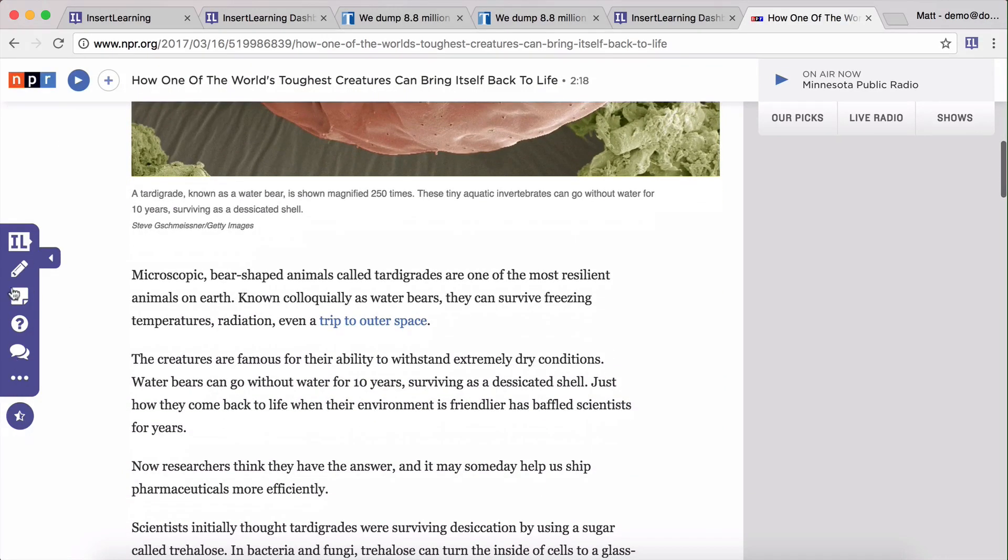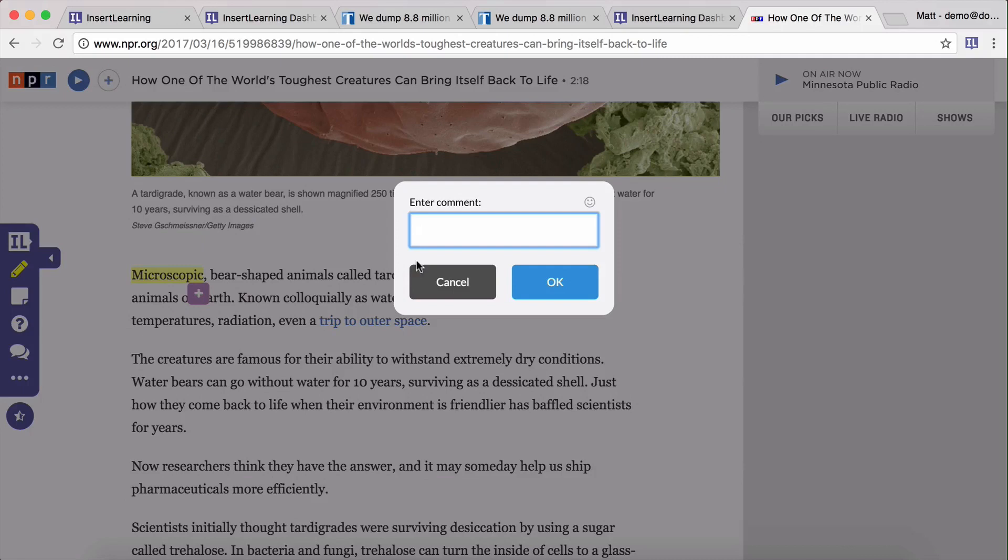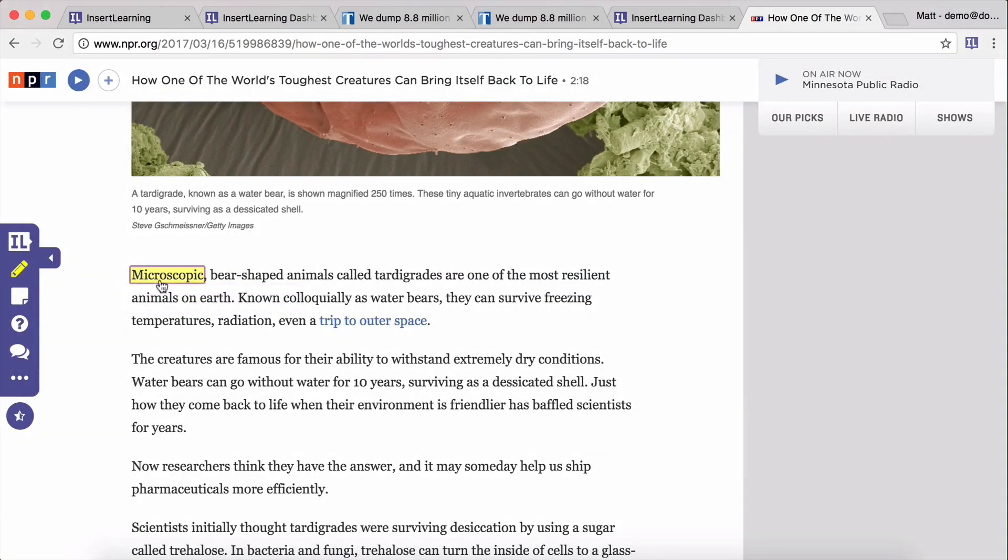So we're going to start off just simply from the top here. This first one is your annotation tool. So I'm going to click on that, and I'm going to highlight microscopic. We add a little note. And there we go. So now the students will see that little annotation I've got, and it's got a little box on it, meaning that it's got a note attached to it.